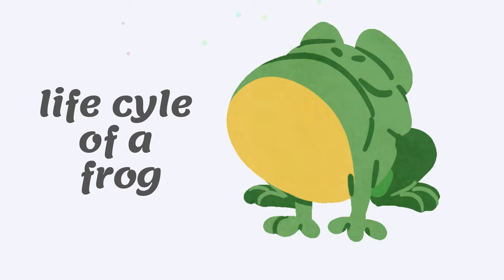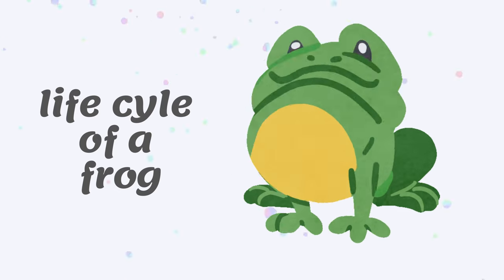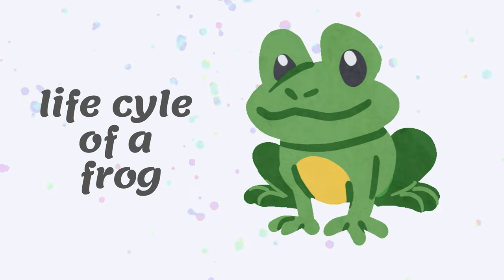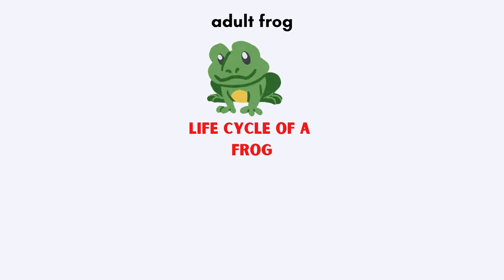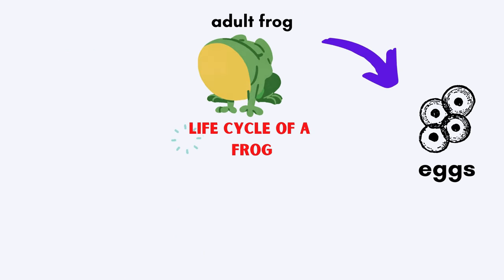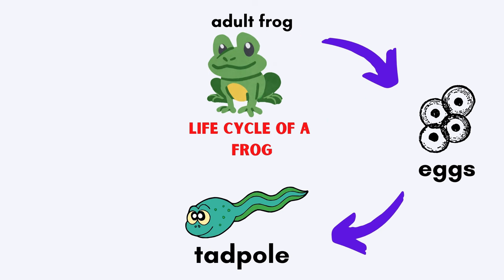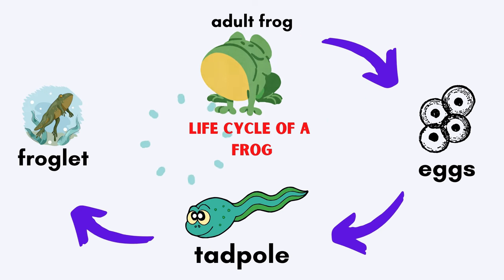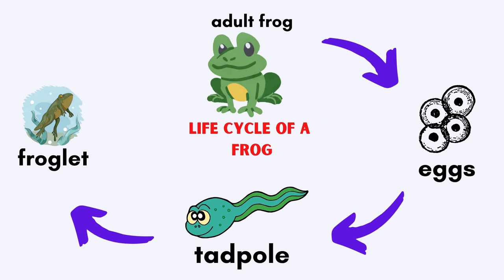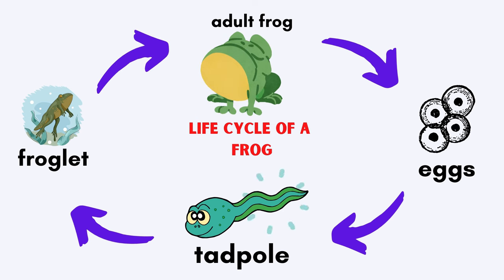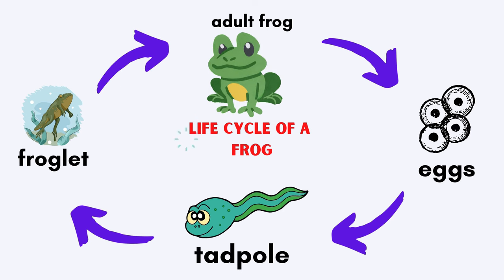Life cycle of a frog. An adult frog will lay eggs. An egg will hatch and become a tadpole. It will grow and become a froglet, and later on into an adult frog.